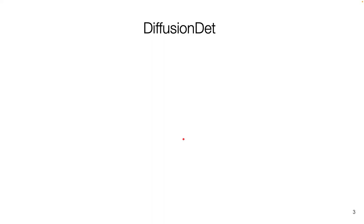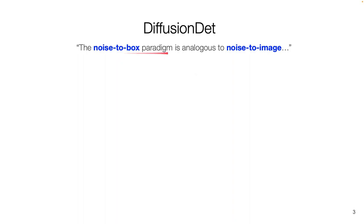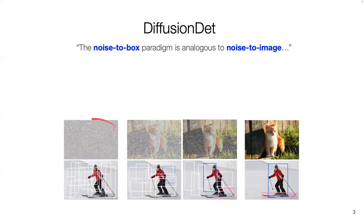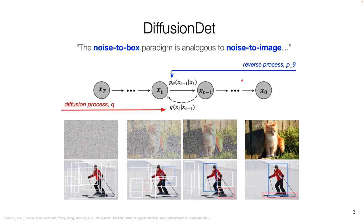A little bit about DiffusionDet first. The authors initially started with a hypothesis that the noise-to-box paradigm is analogous to noise-to-image. In diffusion modeling we've seen recently, there's a noise-to-image process in which we denoise a noisy image. The same concept can be applied to bounding boxes — we have a set of noisy boxes, and we can denoise and generate a set of prediction boxes using diffusion modeling techniques, with forward process Q and reverse process P-theta.